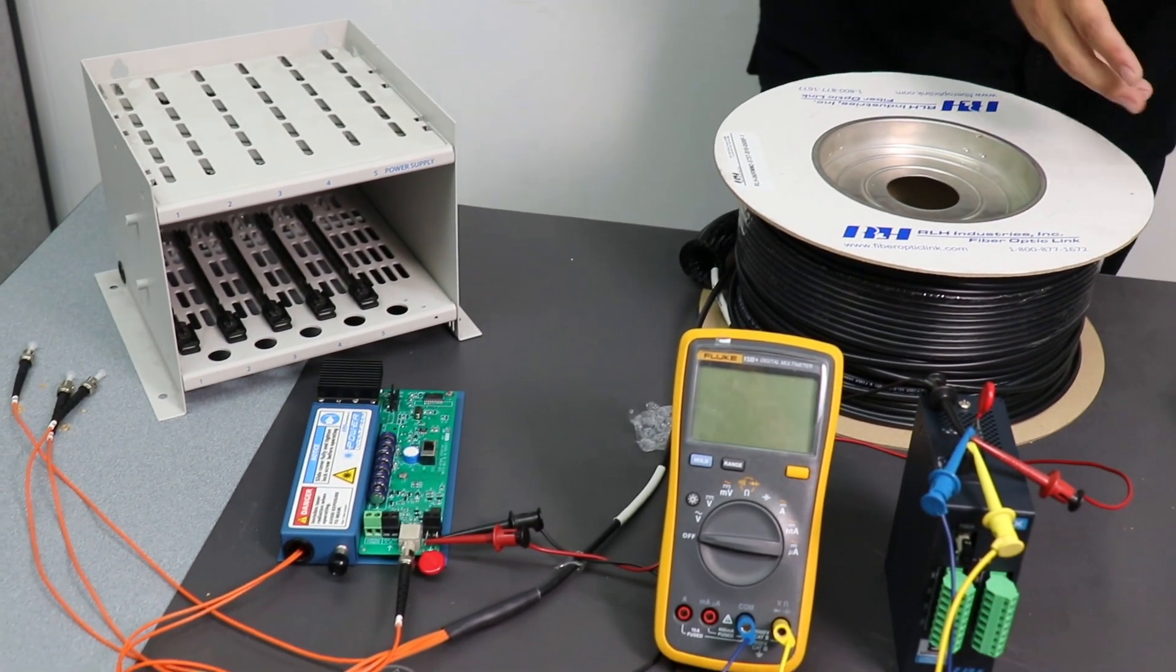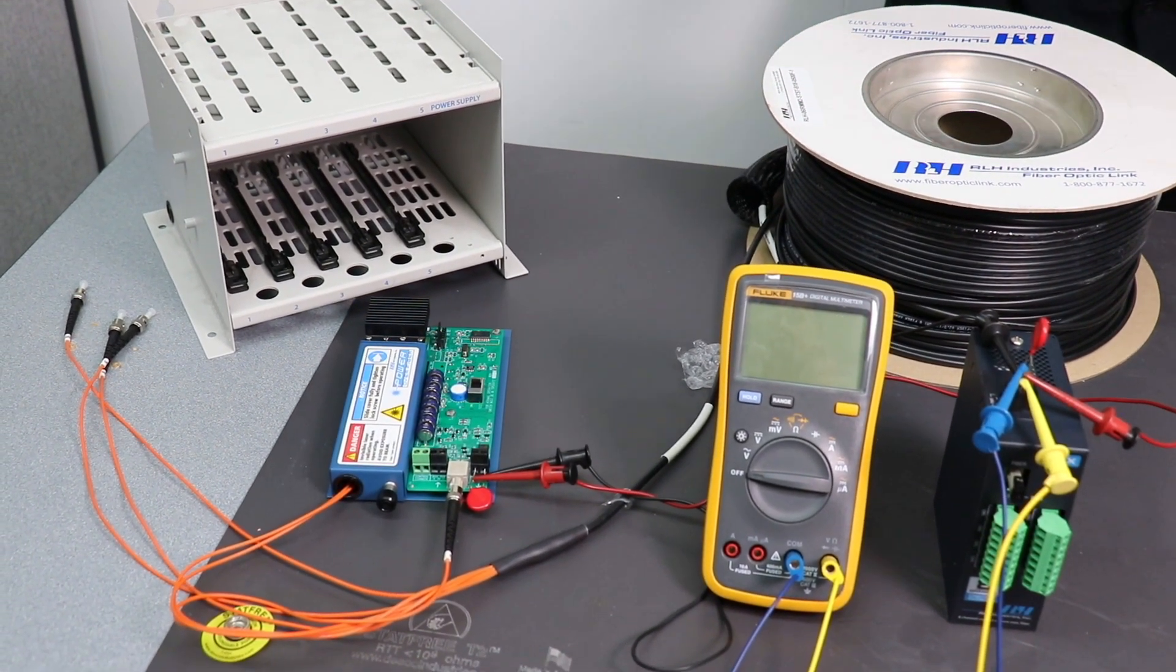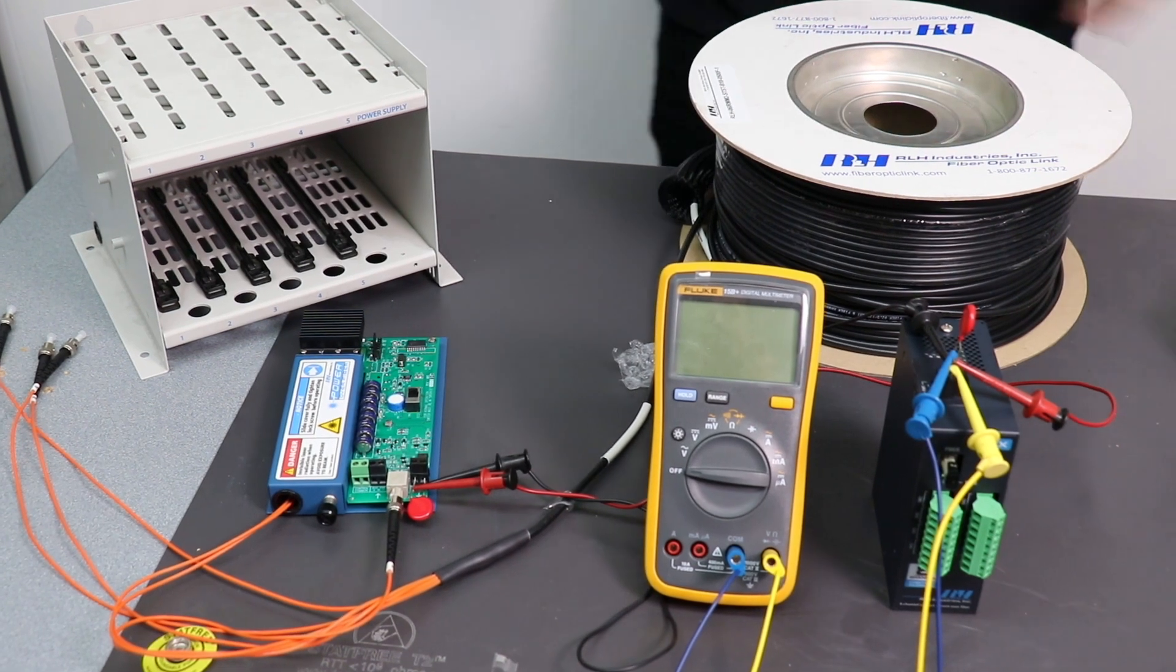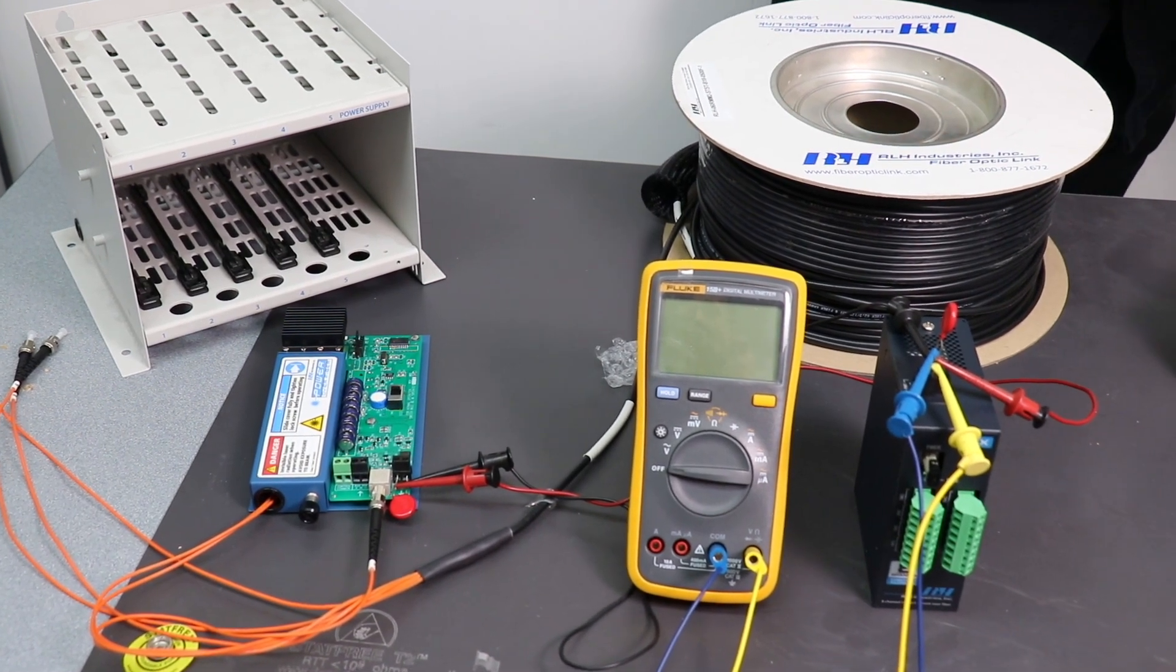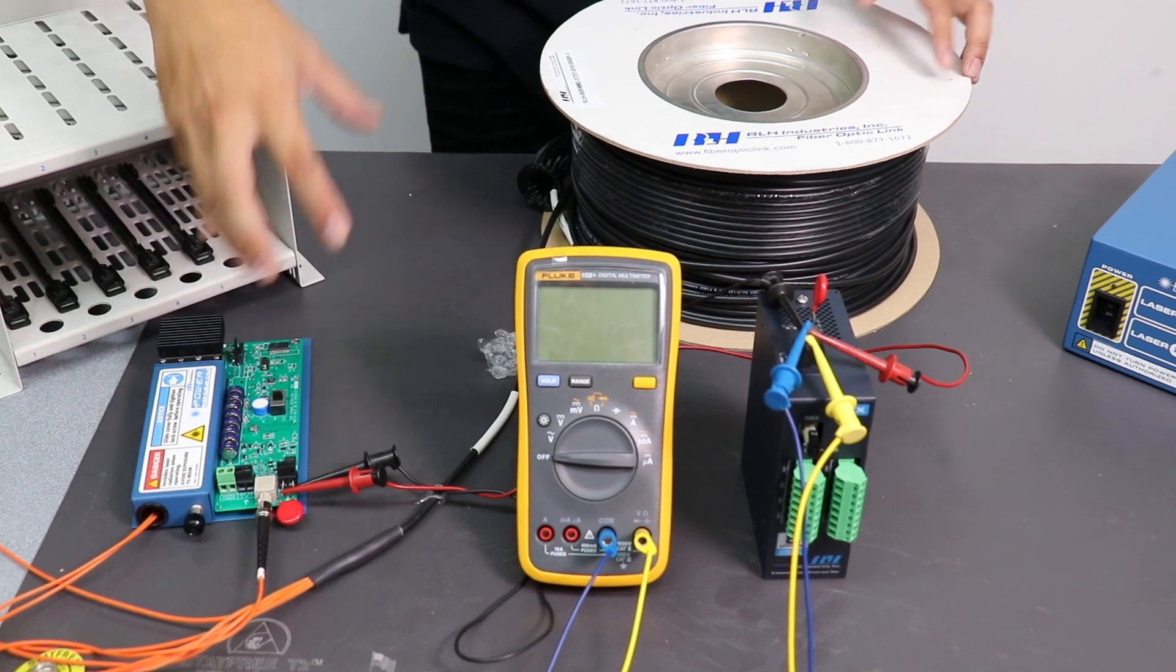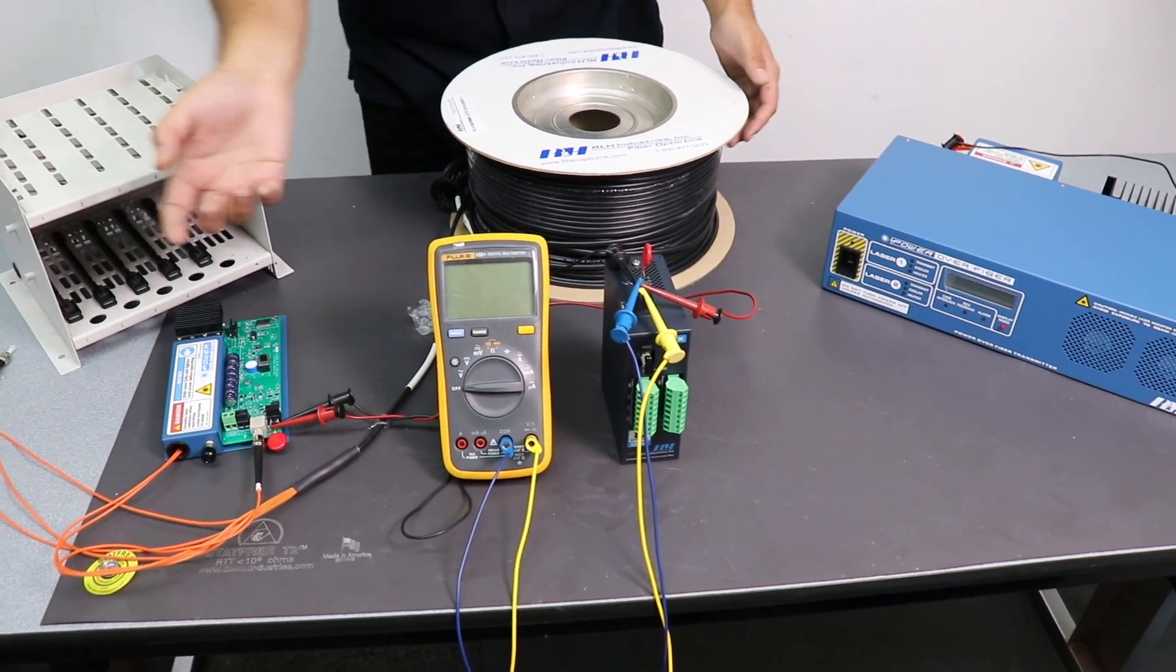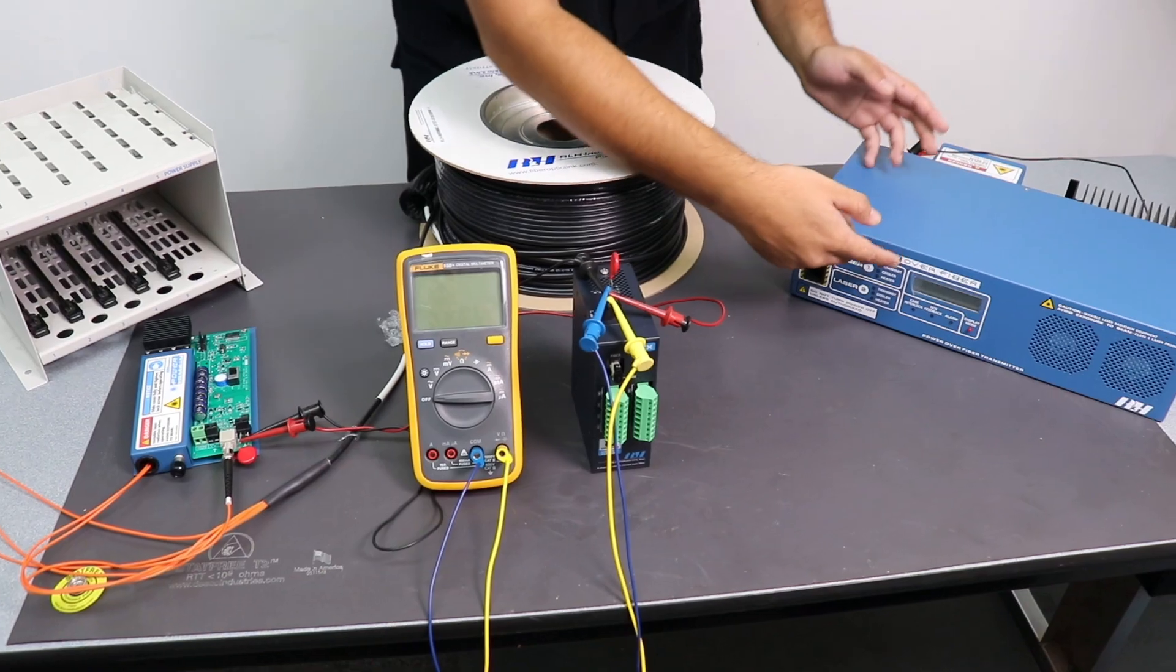So you might be wondering why there are three fiber cables used when you have only two lasers. So two lasers are used to transmit the power, but the third fiber cable is used to receive the feedback from the receiver side if there's any fault or anything, any such scenarios that can occur, it will send back to your display over here.